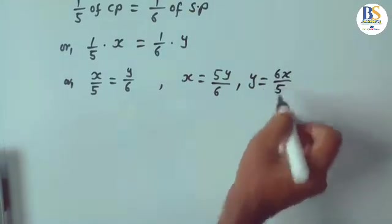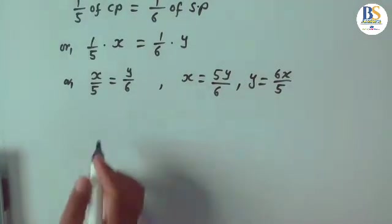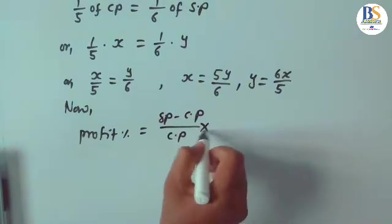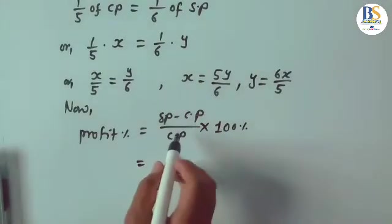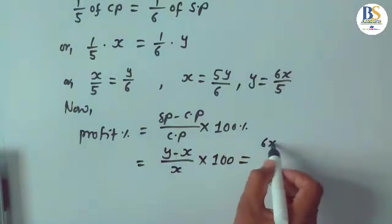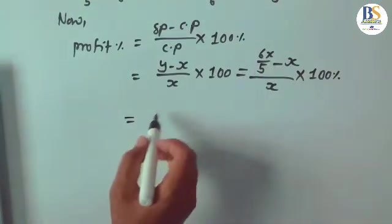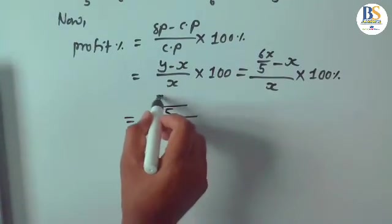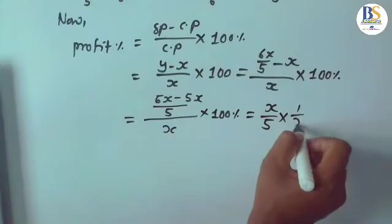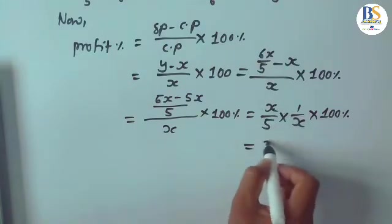Clearly Y is bigger than X, which means there is profit. We calculate profit percent: profit% = (SP − CP)/CP × 100%. Substituting: (Y − X)/X × 100%. Replace Y with 6X/5: (6X/5 − X)/X × 100% = (6X − 5X)/5 divided by X × 100% = X/5 × 1/X × 100%. The X's cancel, giving 100/5 = 20%. The answer is 20%.